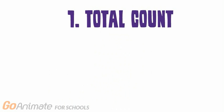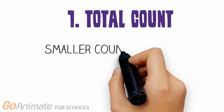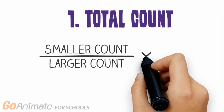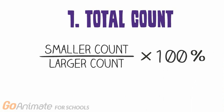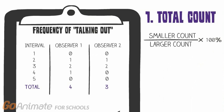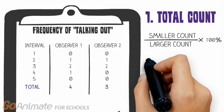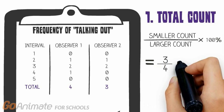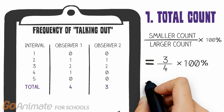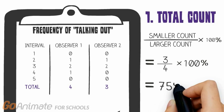Total Count IOA is the simplest approach for event-based data. It represents the percentage agreement between two observers' recordings for the entire observation period and is calculated by dividing the smaller total count observed by the larger total count observed and multiplying by 100%. In our sample data, Observer 1 recorded four instances of the target response and Observer 2 recorded three instances. Dividing the smaller count by the larger count and multiplying by 100%, our Total Count IOA equals 75%.